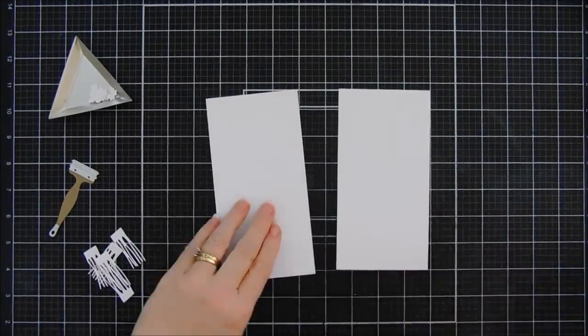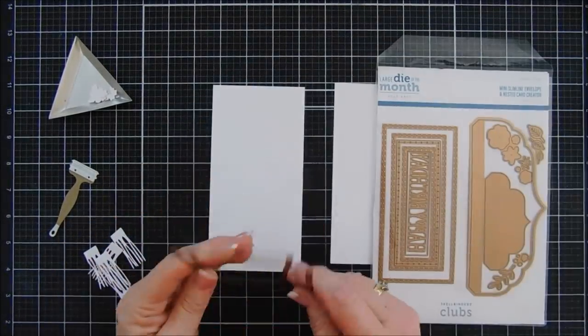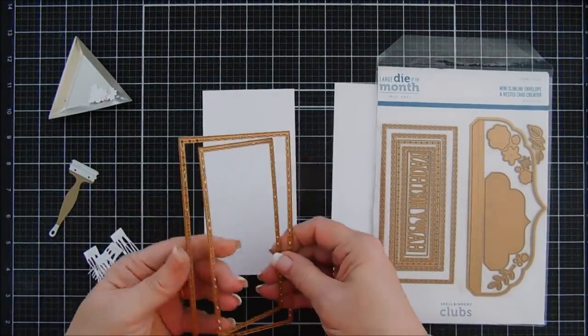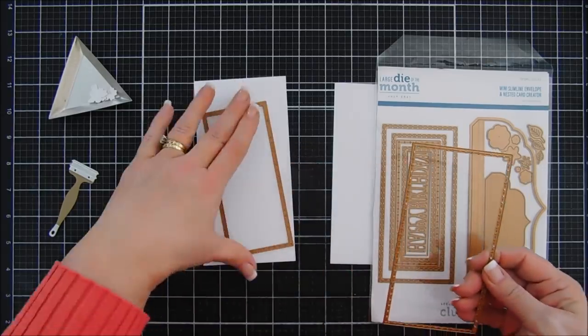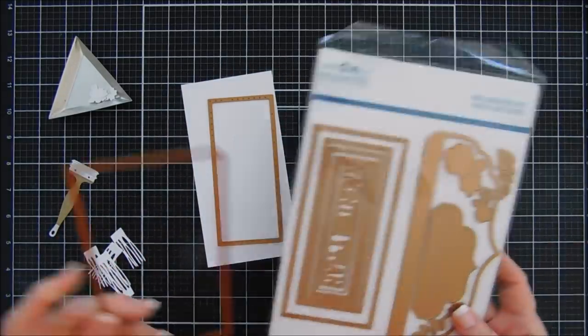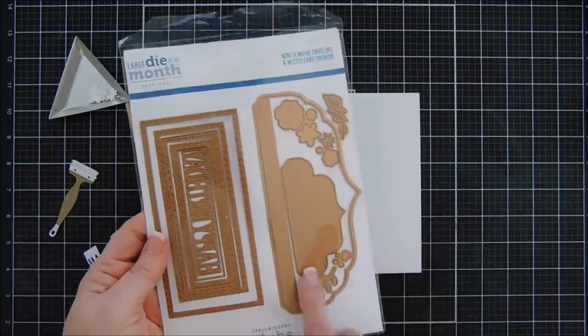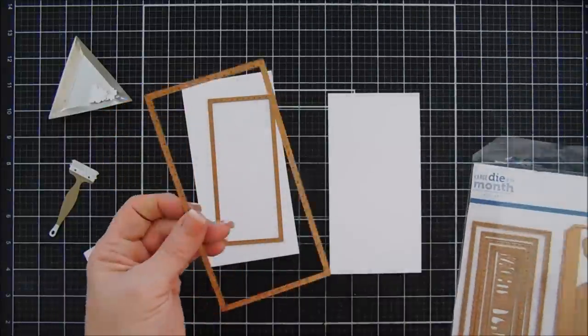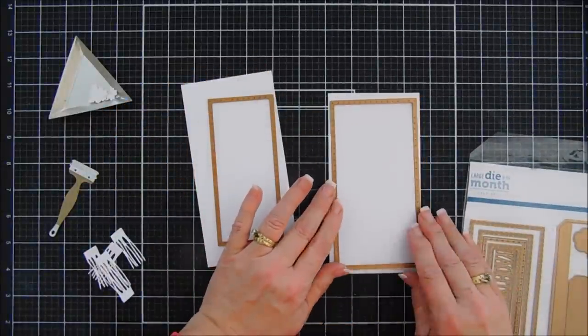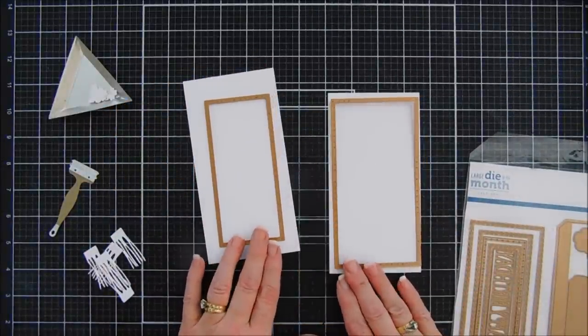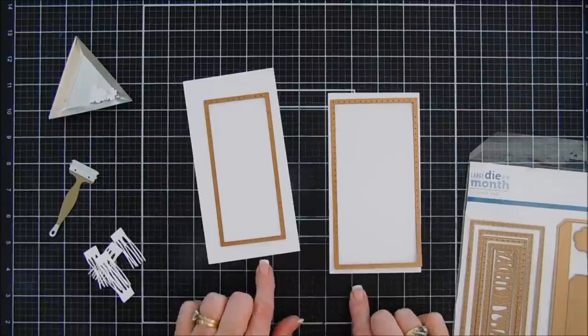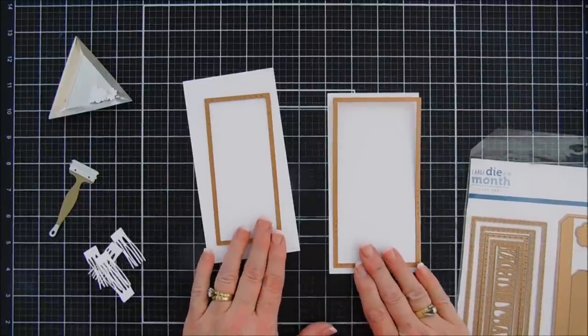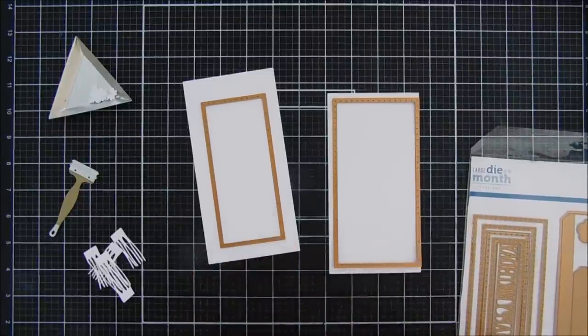Okay. My panels are sized for these dies here. These dies are from the large die of the month club. I think they have these separately, but they're perfect for mini slimline. So I'm going to use both the largest dot dash detail dies and I'm going to run these through my die cutting machine.